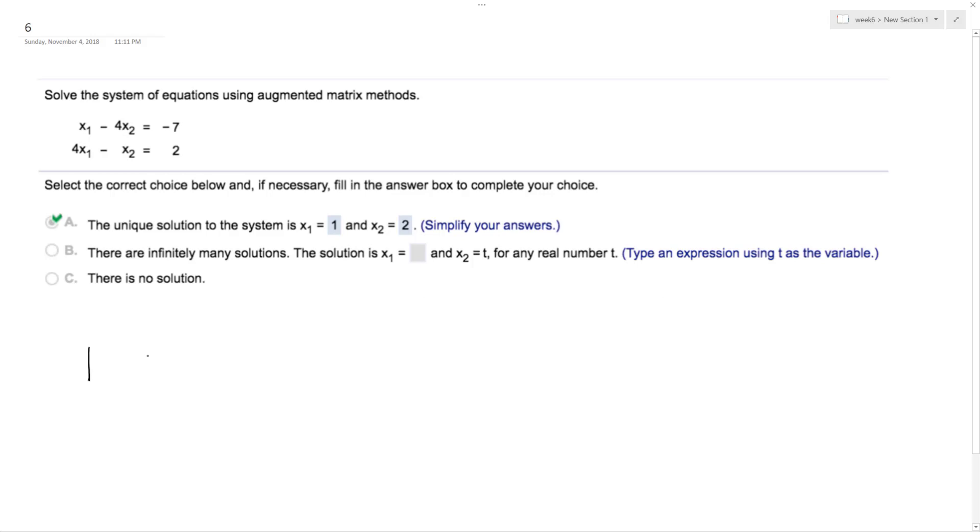That just means I can write this as 1, negative 4, 4, negative 1, and then 2, and negative 7.